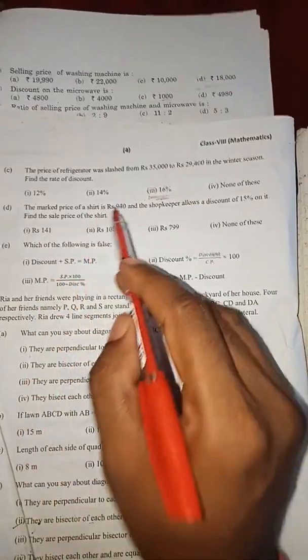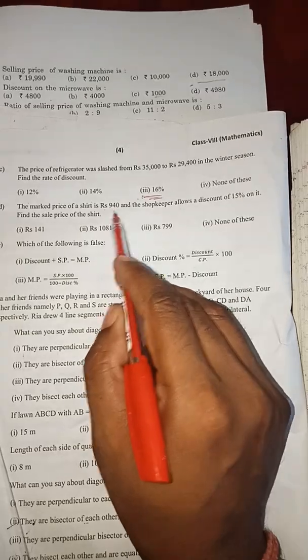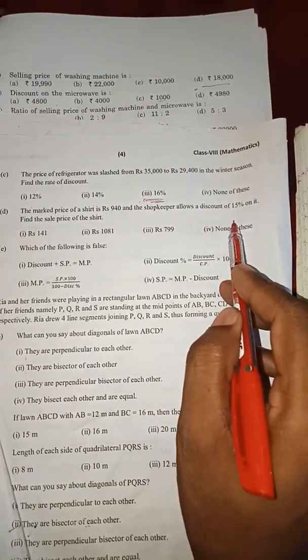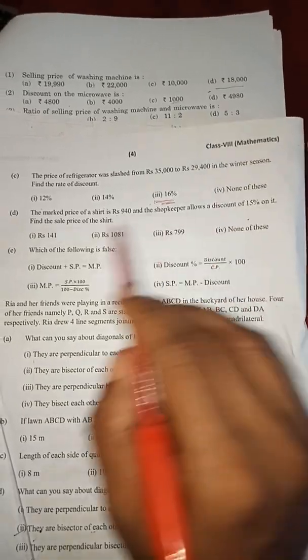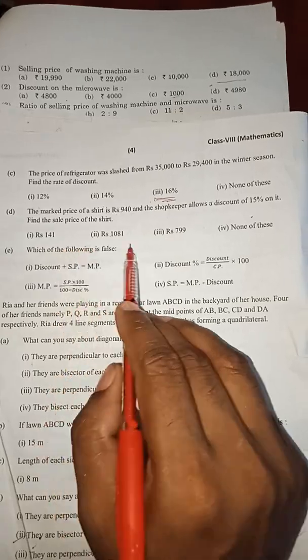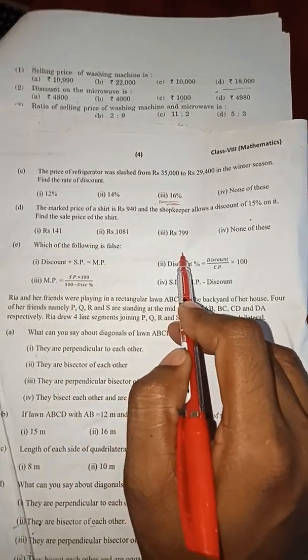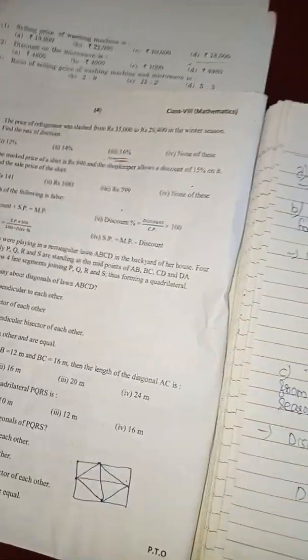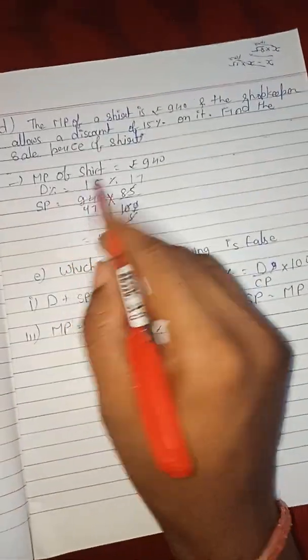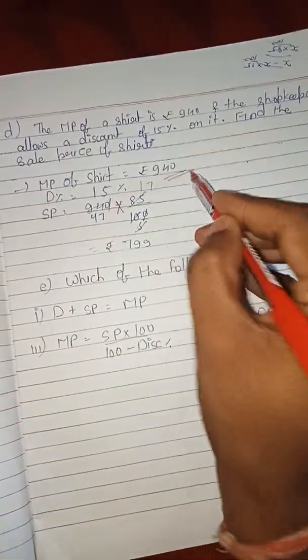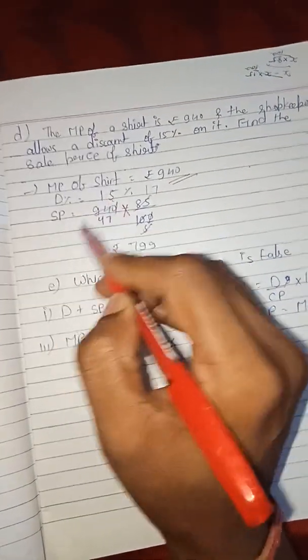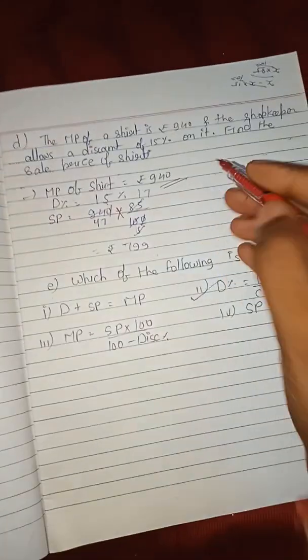Question number D: The marked price of a shirt is 940 rupees and the shopkeeper allows a discount of 15 percent on it. Find the sale price of the shirt. Four options are given again.